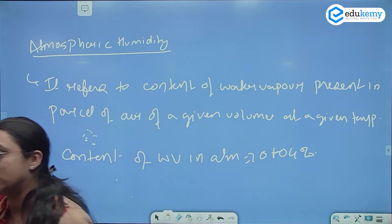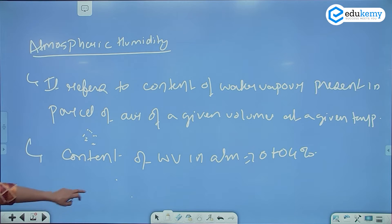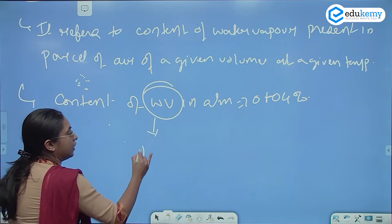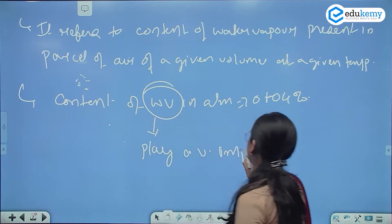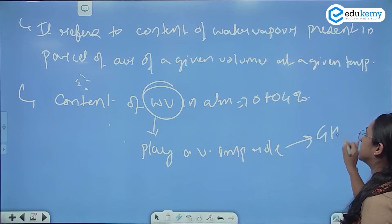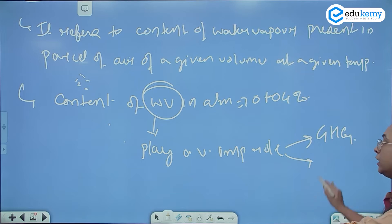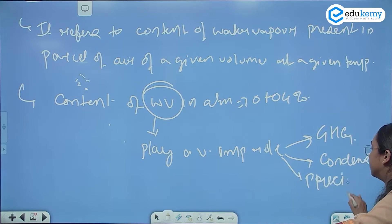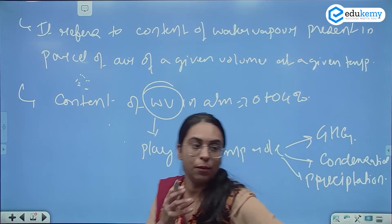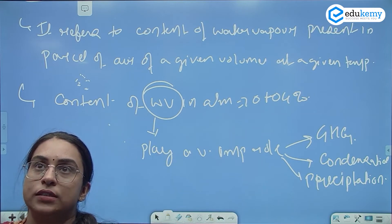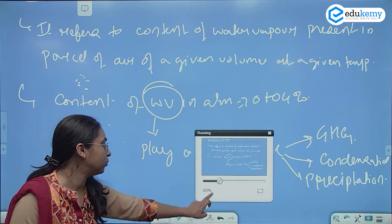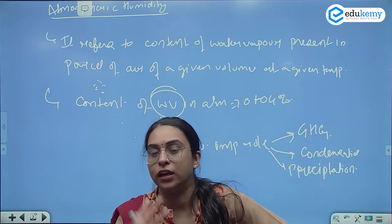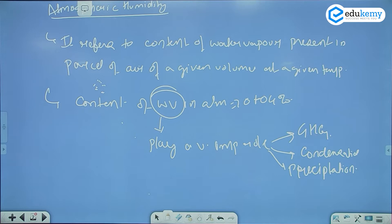In very humid areas, the amount of water vapor can be as high as 4%. This water vapor plays a very important role because it also acts as a greenhouse gas. It plays an important role in condensation and precipitation in a region — that is decided by the amount of water vapor in the atmosphere. The amount of water vapor present in a given parcel of air of a definite volume at a given temperature — that is humidity.